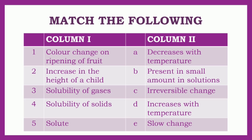Children, the next question: Match the Following. Your Column 1 consists of — Number 1: Color Change on Ripening of Fruit. Number 2: Increase in the Height of a Child. Number 3: Solubility of Gases. Number 4: Solubility of Solids. Number 5: Solute. Column 2 consists of — Number 8: Decreases with Temperature. Number 5: Present in Small Amount in Solutions. Number 6: Irreversible Change. Number 6: Increases with Temperature. Number 7: Slow Change.